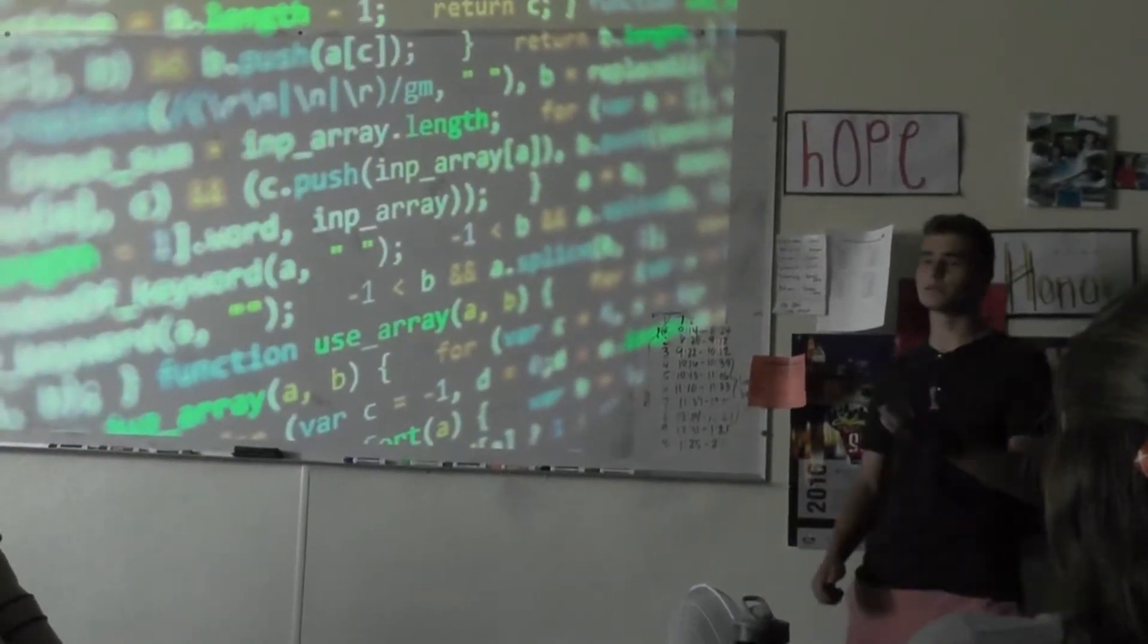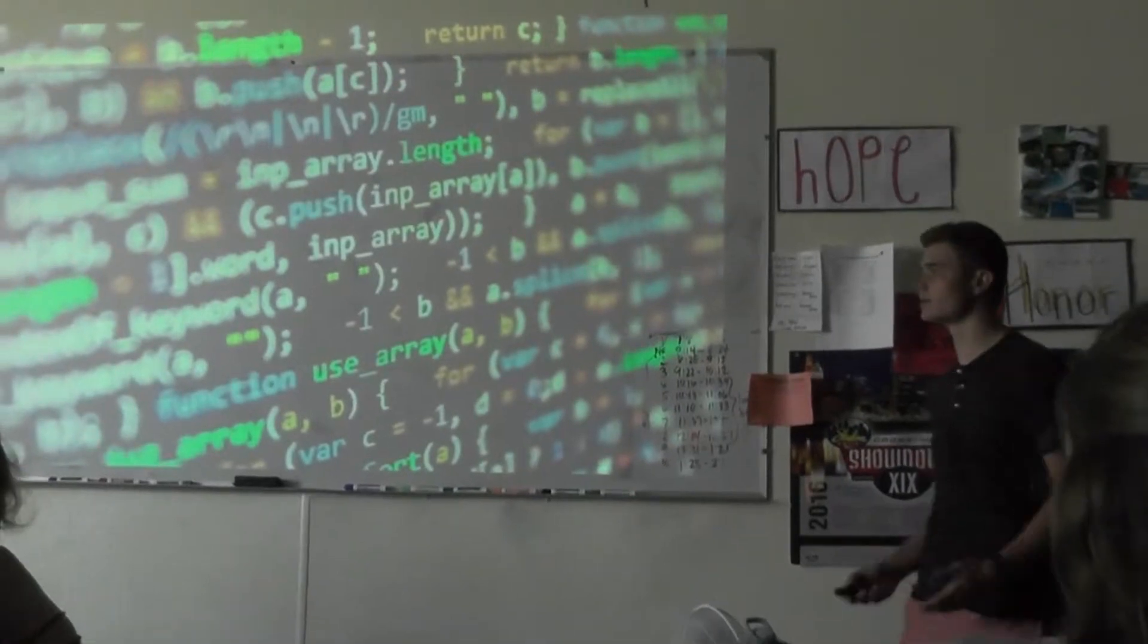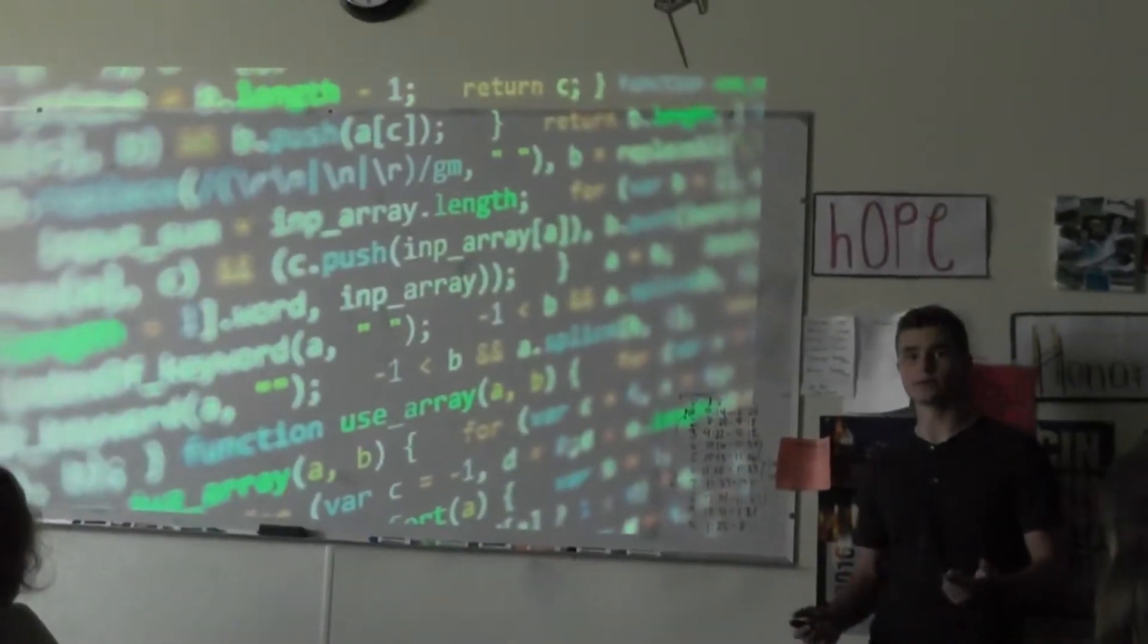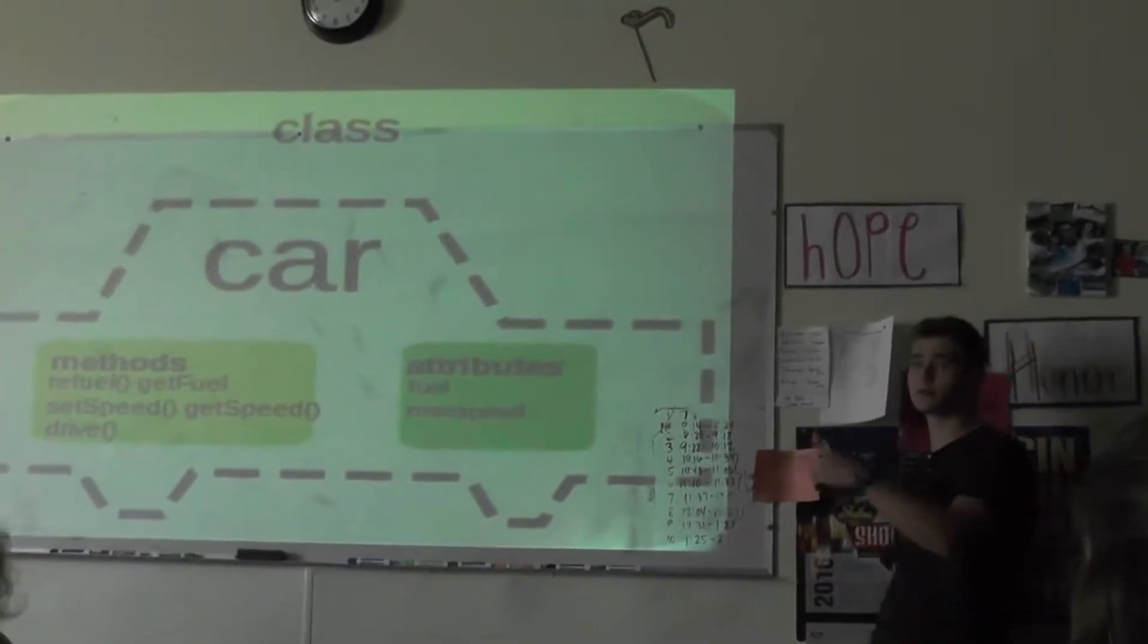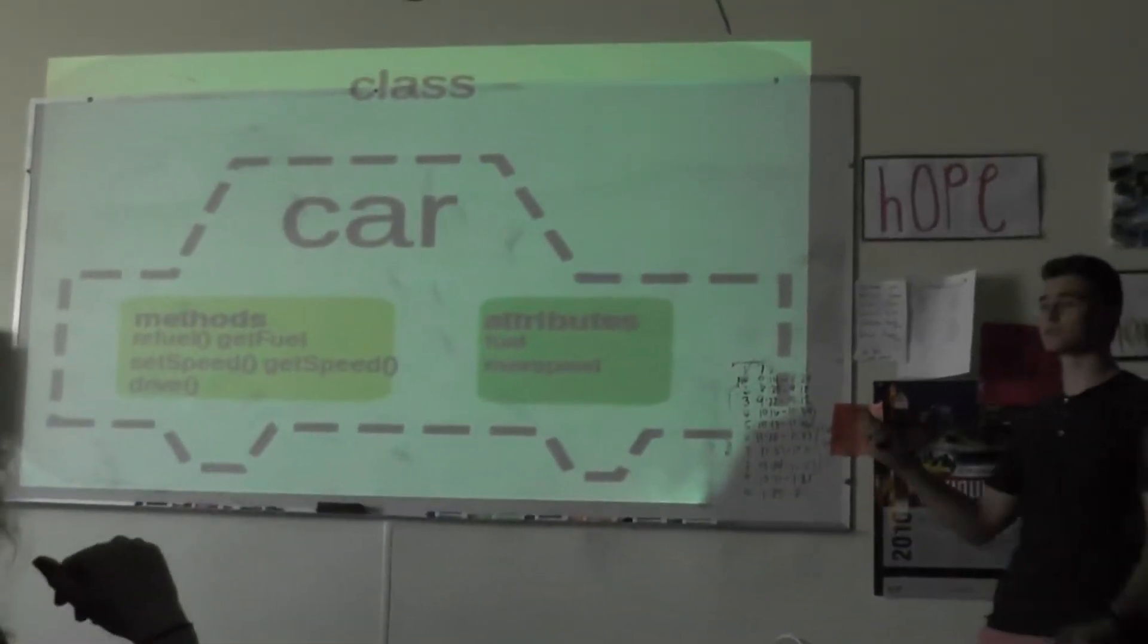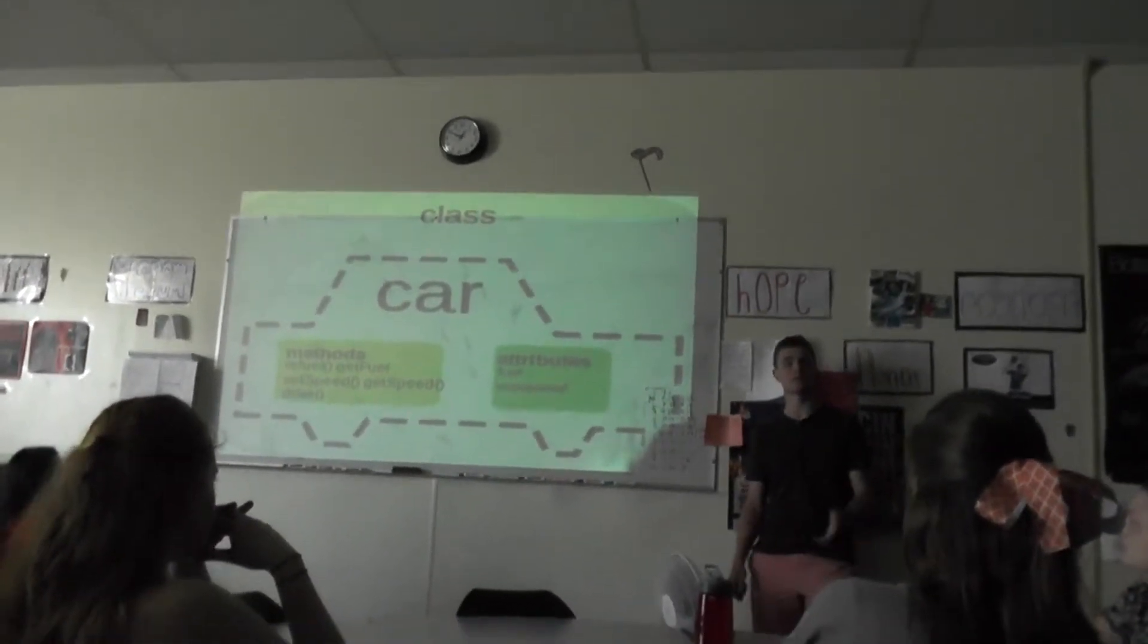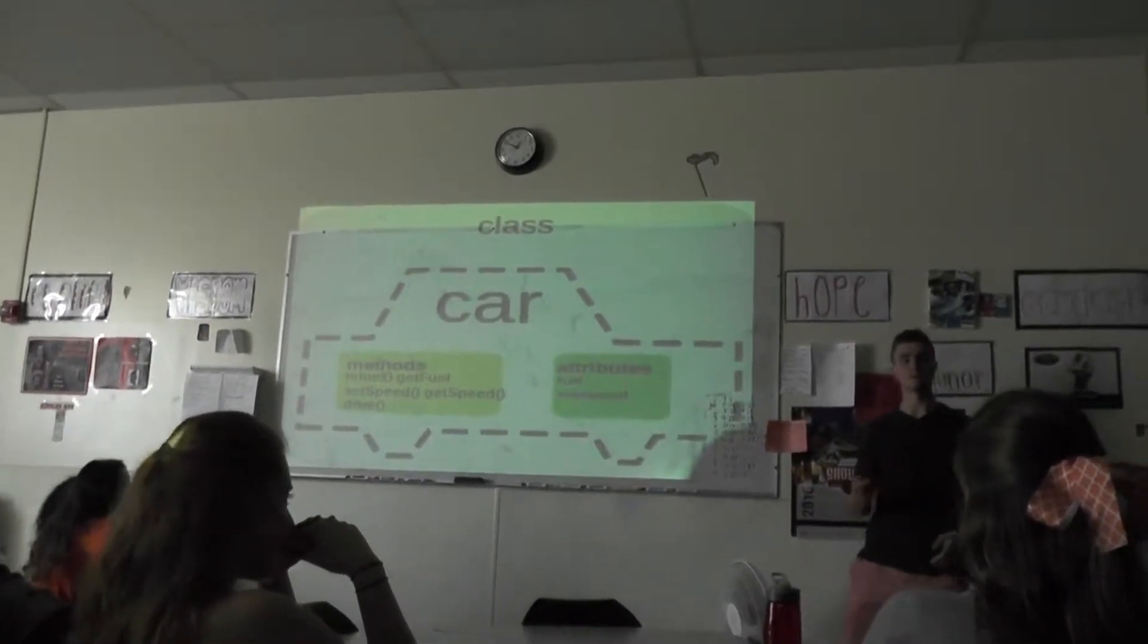First I'm going to start off with some examples of what programming actually is and how they come up with these ideas of things like Google where they have a search engine and things like Watson where he can come up with his own answers for Jeopardy. To begin with, we start off with a regular car. The whole car in itself is what's called class and your methods will be things like refuel or get more fuel or set your speed that you're going to be at when you're driving or get the speed from what your pedometer is saying.